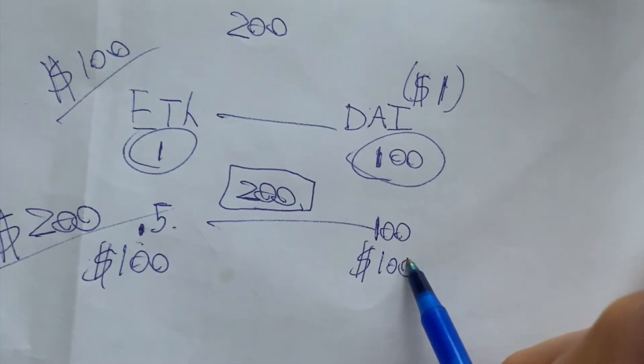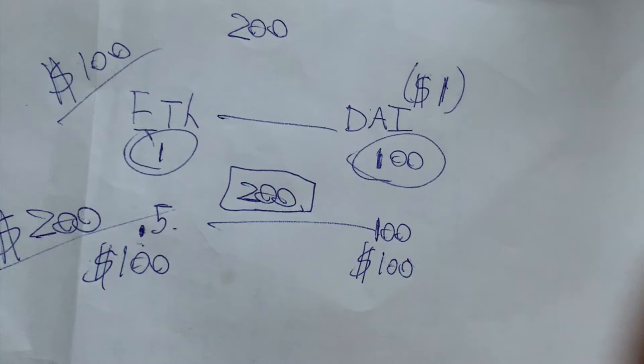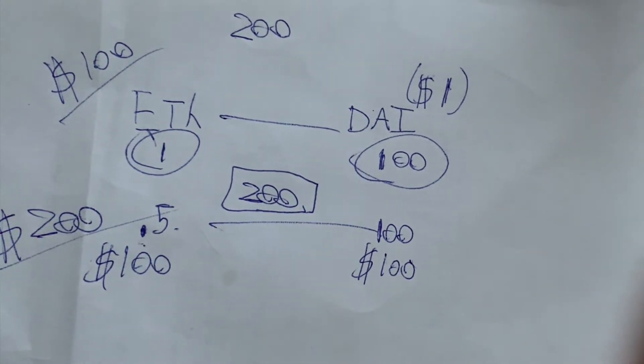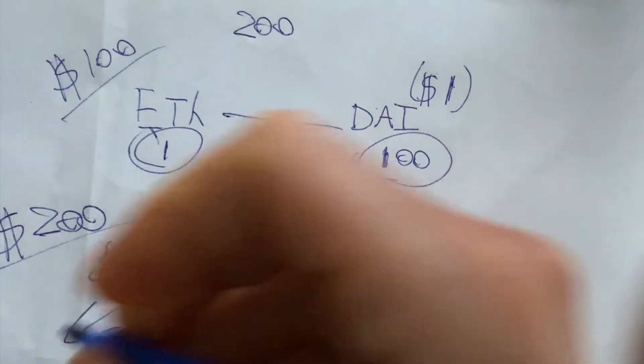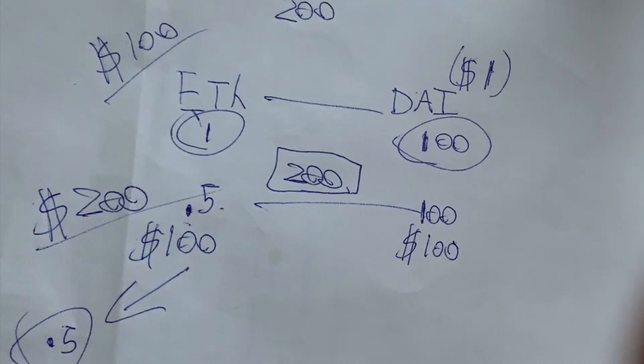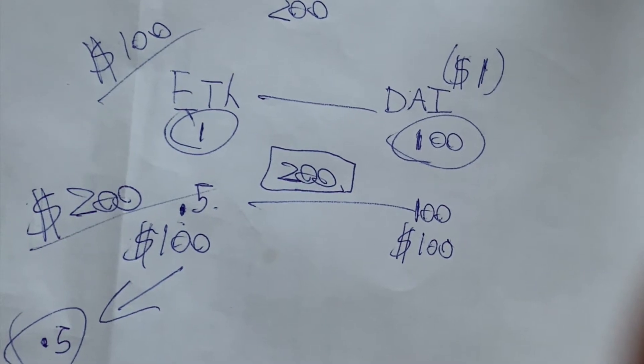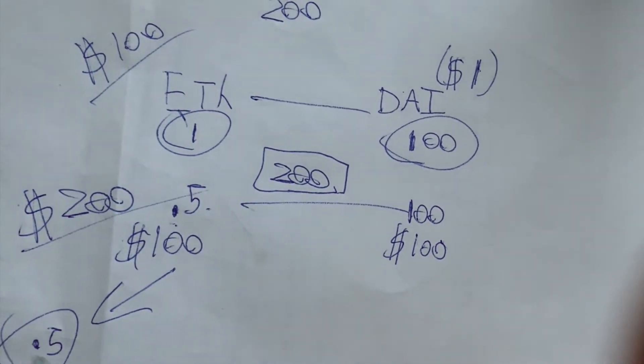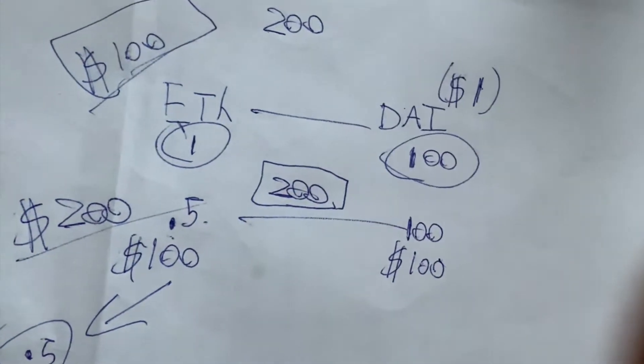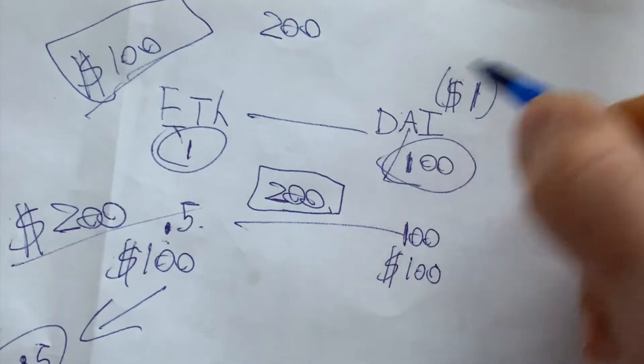So now here's where the problem is. I want to take profits on ETH because it's $200. I bought it for $100, I'm going to double my money. Time to withdraw. Wait. I can only withdraw half an ETH. That's weird.